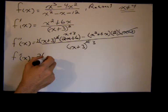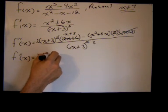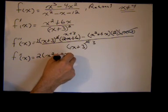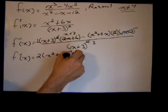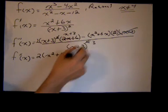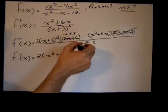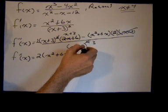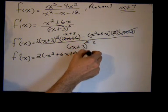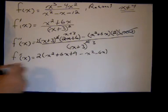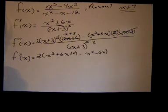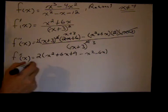Anyway, x plus 3 squared is x squared plus 6x plus 9 and then this 2 is gone, it's right here, minus x squared minus 6x and yeah, that's right.